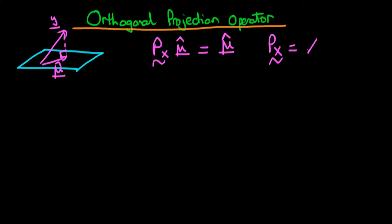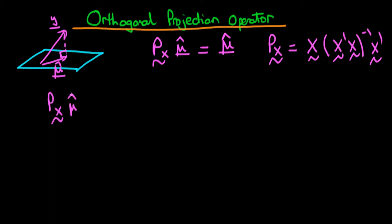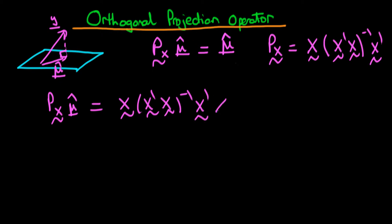We just wanted to check that this was actually the case for our projection operator. Our orthogonal projection operator P(X), which we found in the last video, is equal to X(X'X)⁻¹X'. If we apply the projection operator to μ̂, we get X(X'X)⁻¹X' times μ̂. But we know that μ̂ is just equal to Xβ̂.